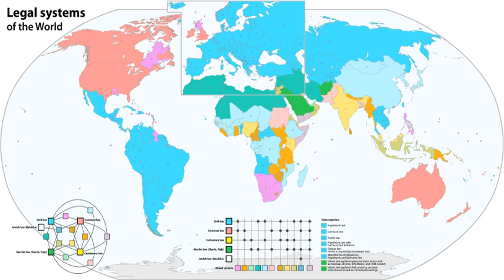German civil law is in use in Germany, Austria, Russia, Switzerland, Estonia, Latvia, Bosnia and Herzegovina, Croatia, Kosovo, Macedonia, Montenegro, Slovenia, Serbia, Greece, Portugal and its former colonies, Turkey, and East Asian countries including Japan, South Korea, and Taiwan, Republic of China.